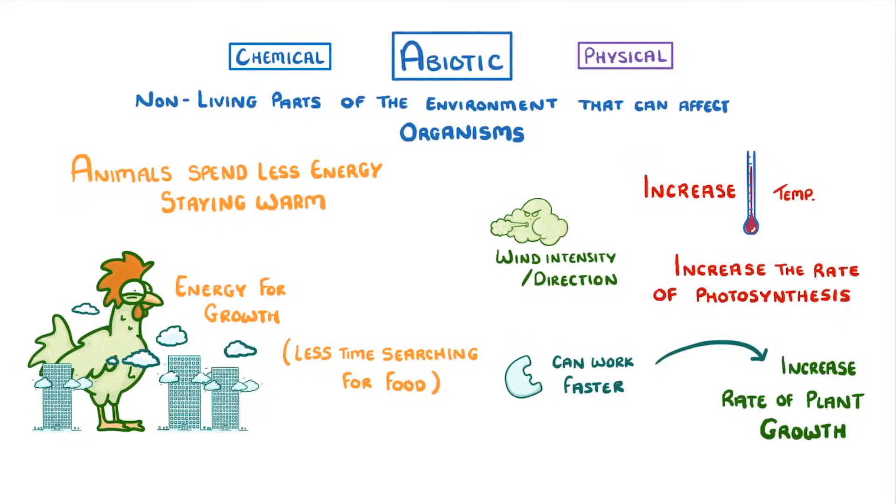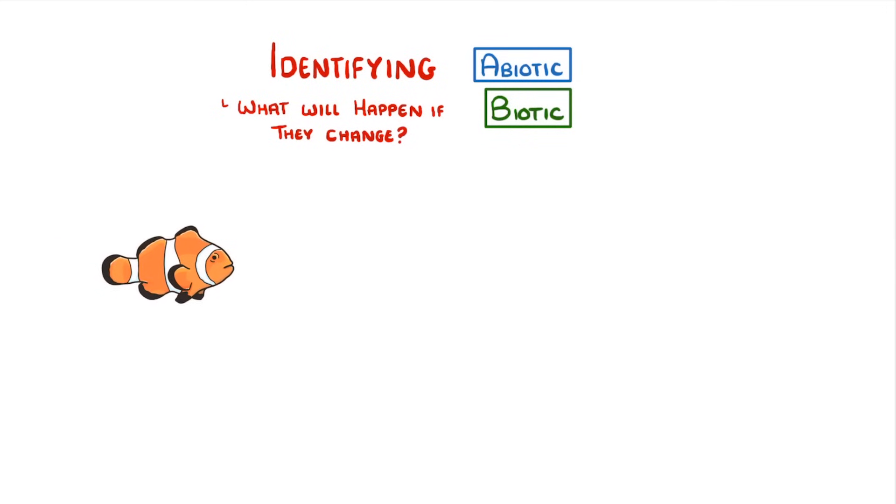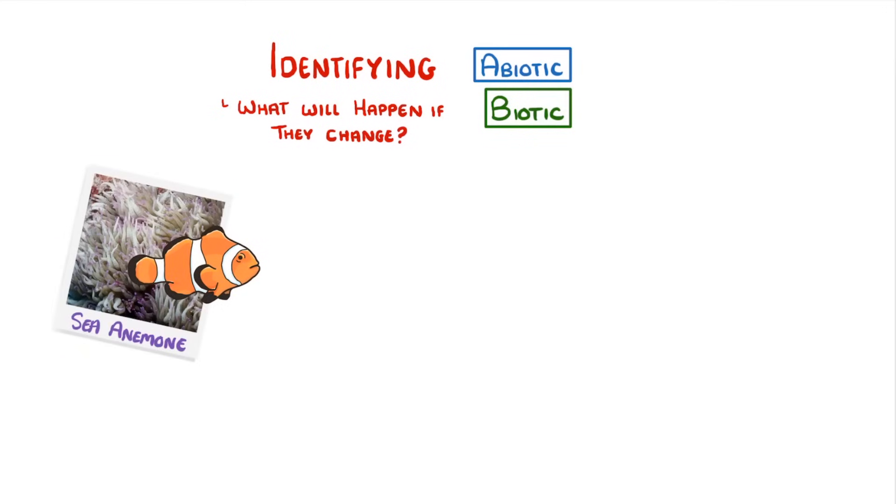Now typical questions for this topic will generally focus around identifying these various biotic and abiotic factors and then trying to explain what will happen if they change. So if you think about a clownfish chilling out by its sea anemone, what would be the main biotic and abiotic factors that affect it?